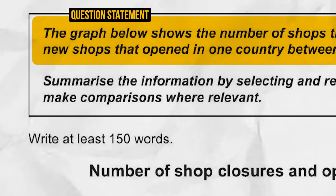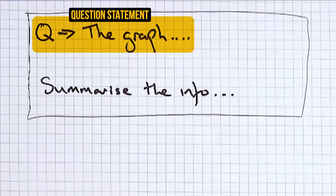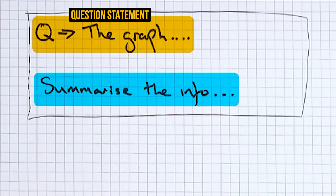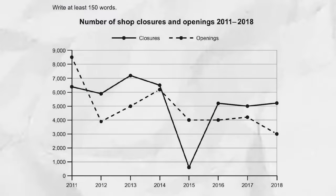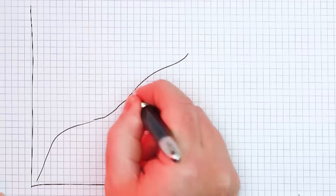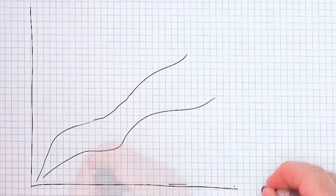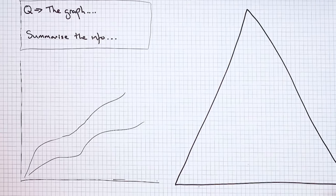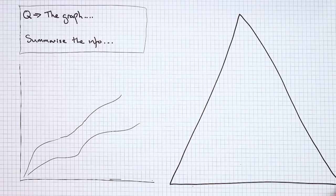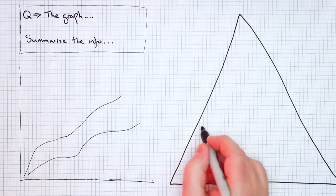At the end of this video, I'll show you something that you should never do when using this strategy. All Task 1 questions in the academic part of the test will look like this. You'll have a question statement, and it will say something like 'graph,' and then it will tell you to summarize the information. Then you'll have some kind of graph, for example a line graph, and you will write your report based on the information. There are three parts to your writing.